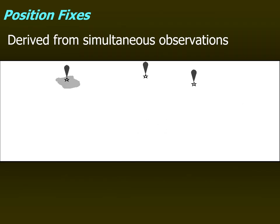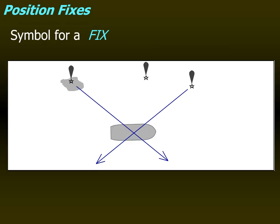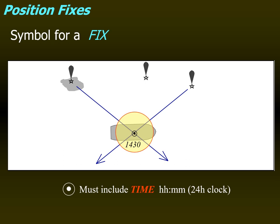Now we talk about simultaneous observations. Simultaneous observations involve obtaining position lines at the same time. When several simultaneous observations are made and the corresponding position lines are plotted together on the chart, we say that we have determined our position by fixing. A position fix is the intersection of a minimum of two or more position lines derived at the same time. The symbol for a fix is an encircled dot — this is a standard symbol and should not be used for anything else on the chart.